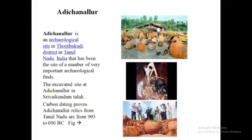Adichanallur is an archaeological site in Thoothukudi district in Tamil Nadu, India, that has been the site of a number of very important archaeological finds. Carbon dating of the excavated site at Adichanallur in Sri Vaikundam, Thoothukudi proves that Adichanallur relics from Tamil Nadu are from 905 BC to 696 BC.